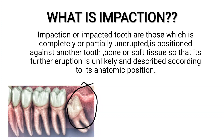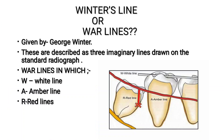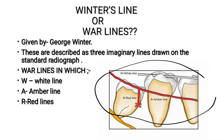Here is an impacted third molar tooth. Now what is WAR line? WAR line is also known as Winter's line, given by George Winter. These are described as three imaginary lines drawn on the standard radiograph. In WAR line, W stands for white line, A for amber, and R for red. You can see this over the diagram.